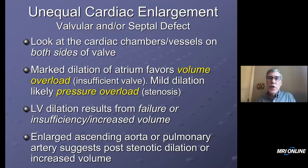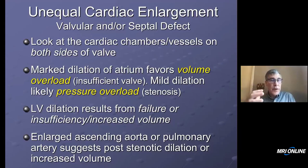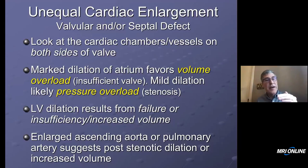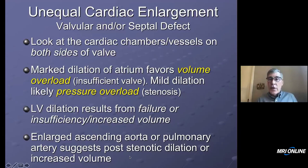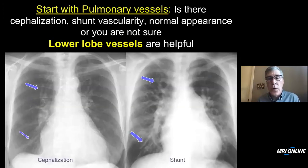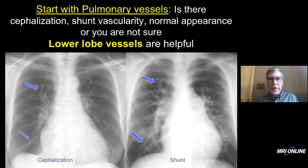In the setting of stenosis, there will be mild dilation of the atria because they're less compliant, and the ventricles do not tend to dilate until they go into failure. The right ventricle with hypertrophy has nowhere to go, so it tends to crawl up the sternum — that's why you get the so-called sternal heave in right ventricular hypertrophy. Enlarged aorta and pulmonary arteries are also useful signs in the setting of post-stenotic dilation or insufficiency. You've got to look at the pulmonary vessels: is this cephalization or shunt vascularity?